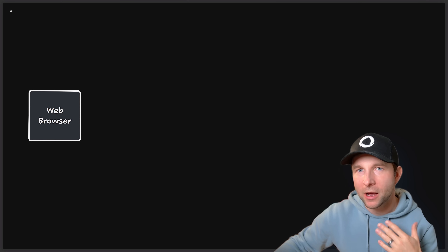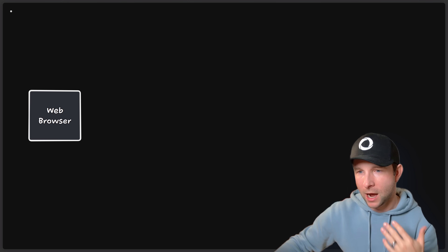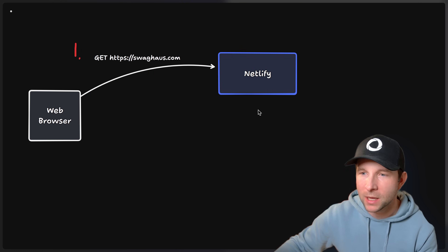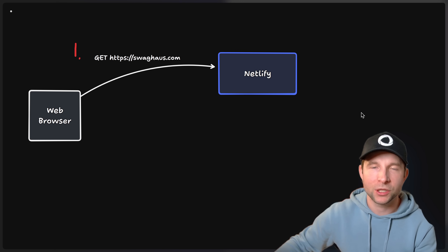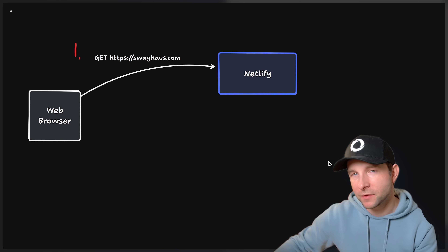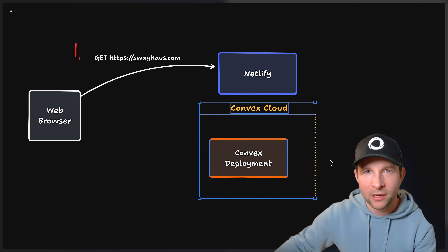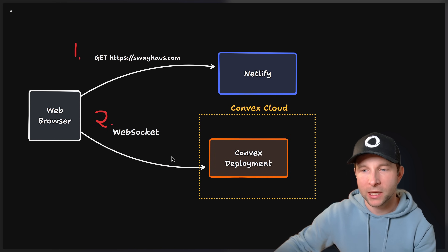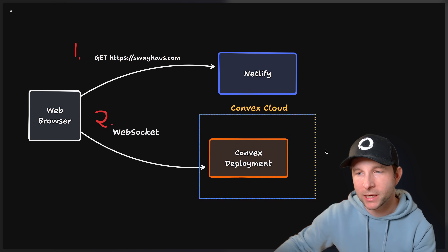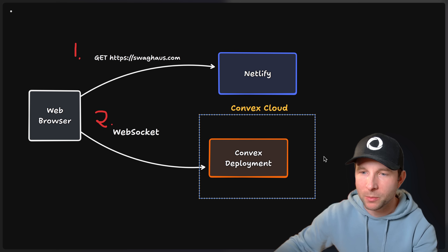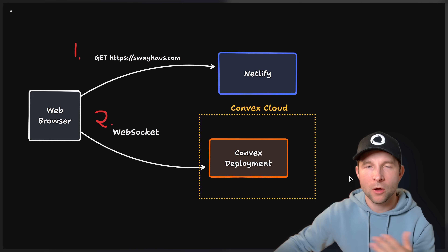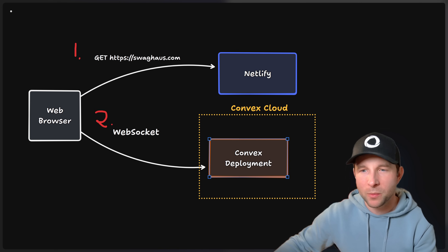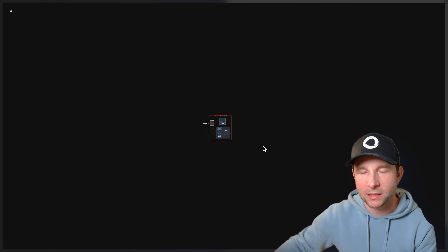When we deploy our front-end code, it goes to a hosting provider like Netlify or Vercel. Whereas our Convex code is going to be pushed to the Convex cloud. That Convex code gets pushed whenever we run Convex Deploy or Convex Dev, which is basically the same as Convex Deploy but with some file watching. So now that our code is hosted, when our web browser opens a connection to get the page swaghouse.com, it's going to go to Netlify, which returns the HTML and JavaScript. The browser then renders that code, which causes the Convex client to open a WebSocket to your Convex Deployment running in the Convex Cloud.